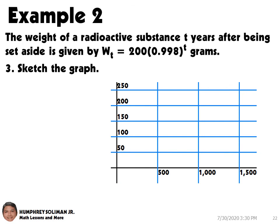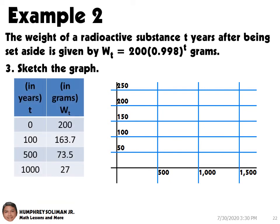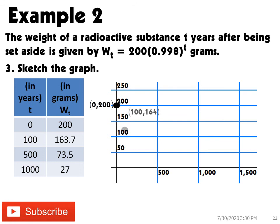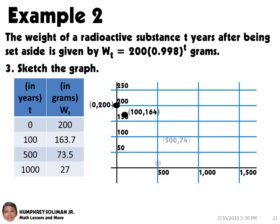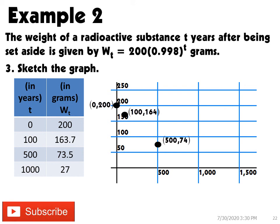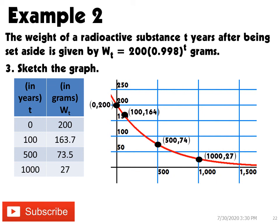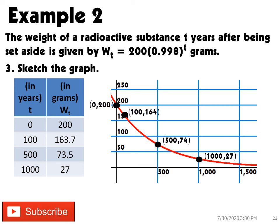Next, in number 3, sketching the graph of the exponential decay of the radioactive substance, we will use the ordered pairs we got from numbers 1 and 2. We can plot the points of the ordered pairs, and then connect these points using a smooth curve. This is now the graph of the exponential decay of the radioactive substance.